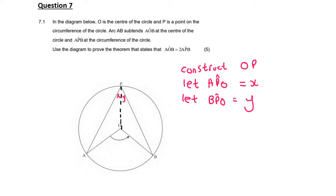So what we could say is that OP is equal to OA. And that's because of radii. And so we can say, therefore, angle A would also be equal to angle A or equal to X because of angles opposite equal.